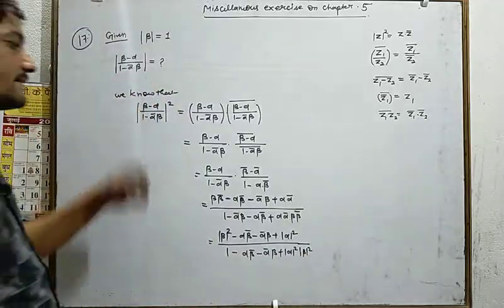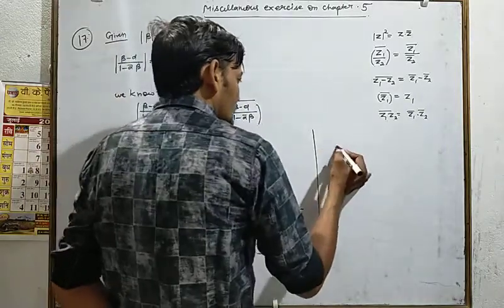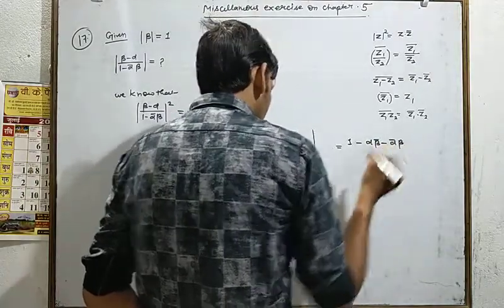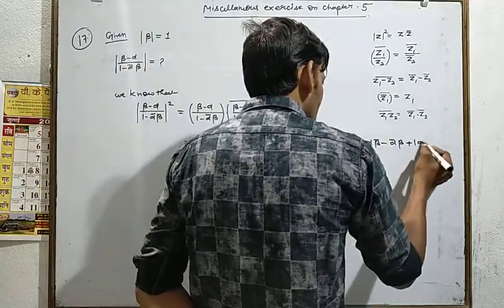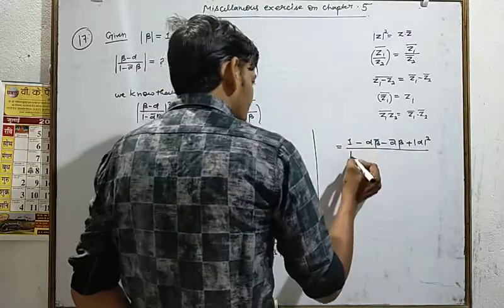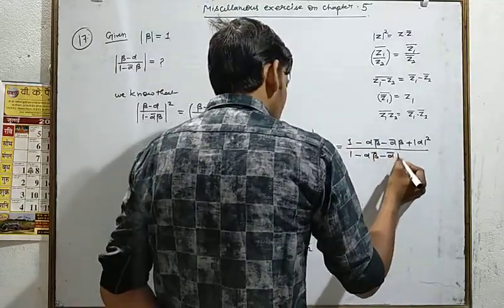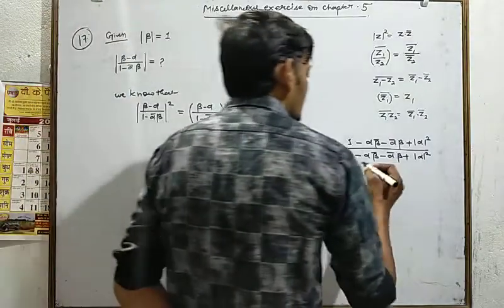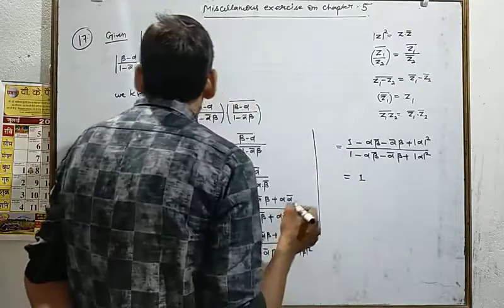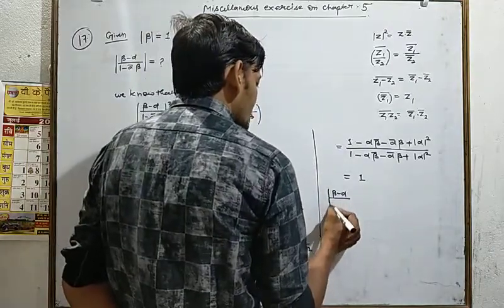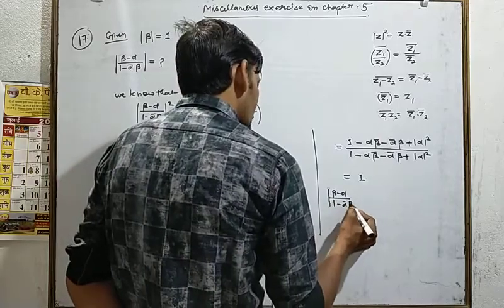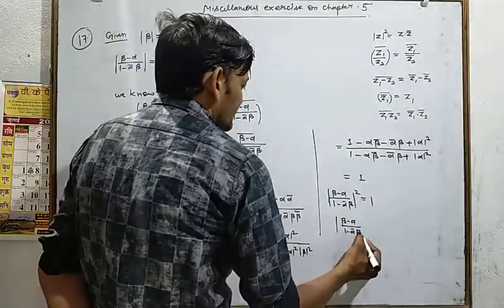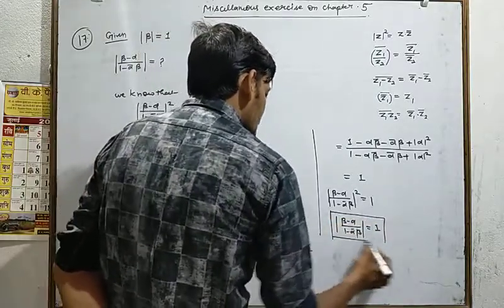Given that mod beta = 1, so mod beta square = 1. Substituting: numerator becomes 1 minus alpha·beta-bar minus alpha-bar·beta plus mod alpha square. Denominator also becomes 1 minus alpha·beta-bar minus alpha-bar·beta plus mod alpha square. These are equal, so mod of (beta minus alpha)/(1 minus alpha-bar beta), whole square equals 1. Therefore mod of (beta minus alpha)/(1 minus alpha-bar beta) equals 1.